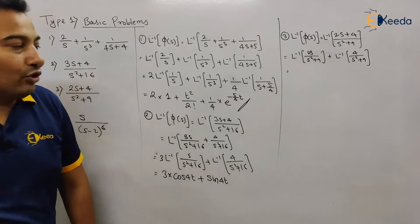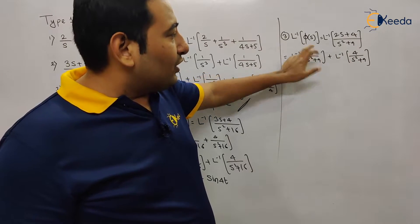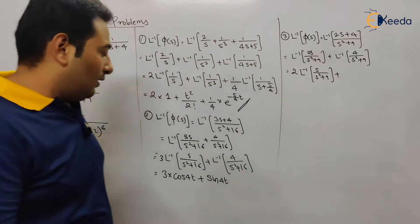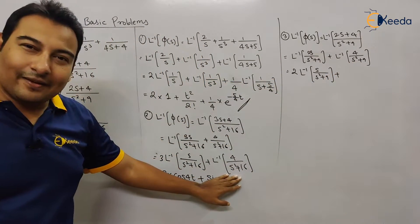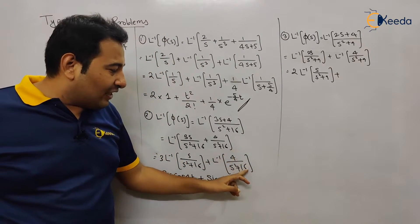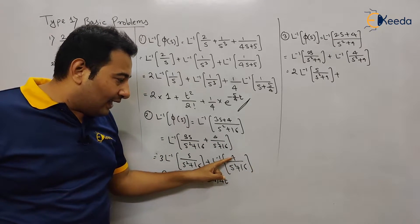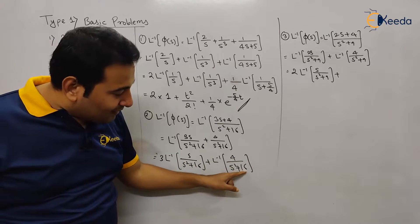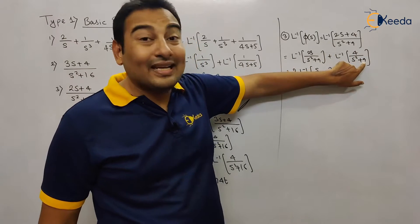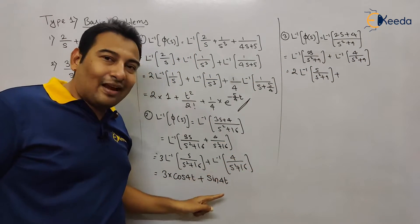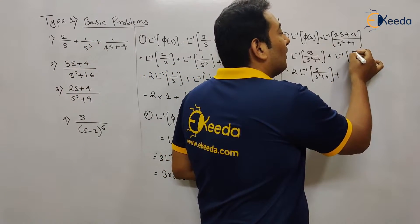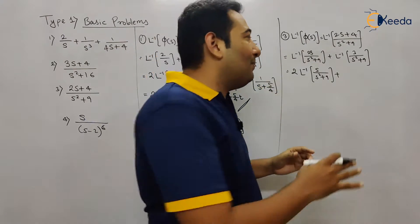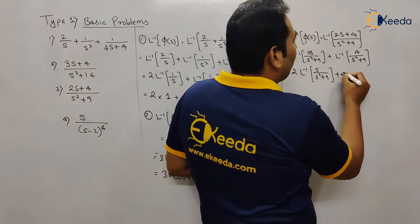Let us look individually at both terms. The 2 is a constant that will come out from the first term, giving 2 times Laplace inverse of s/(s²+9) = 2 cos 3t. For the second term, the formula is a/(s²+a²) → sin(at). But here the numerator is 4 and the denominator has 9 (i.e., 3²), not 16. So you need to take 4 outside, leaving Laplace inverse of 4 × (1/(s²+9)). Using 1/(s²+a²) = (1/a) sin(at), this gives 4 × (1/3) sin 3t.